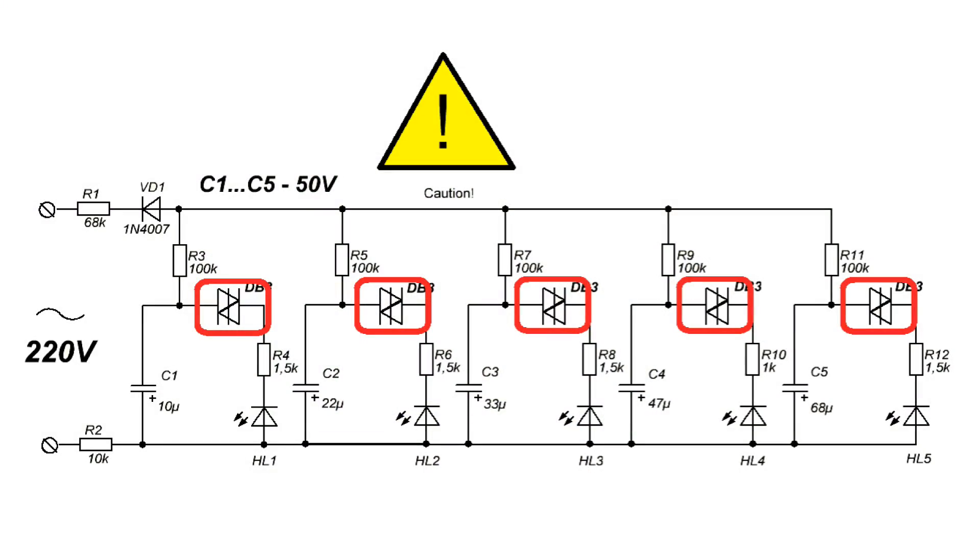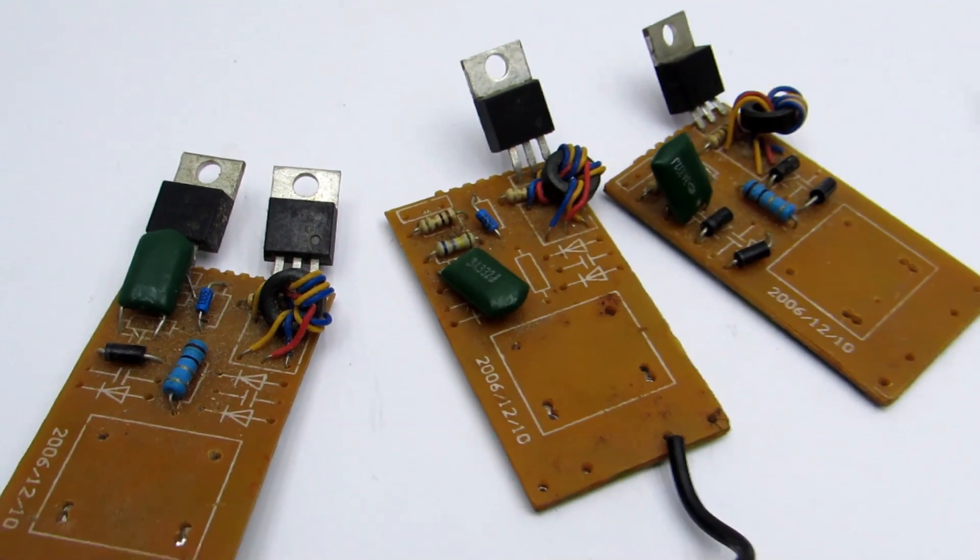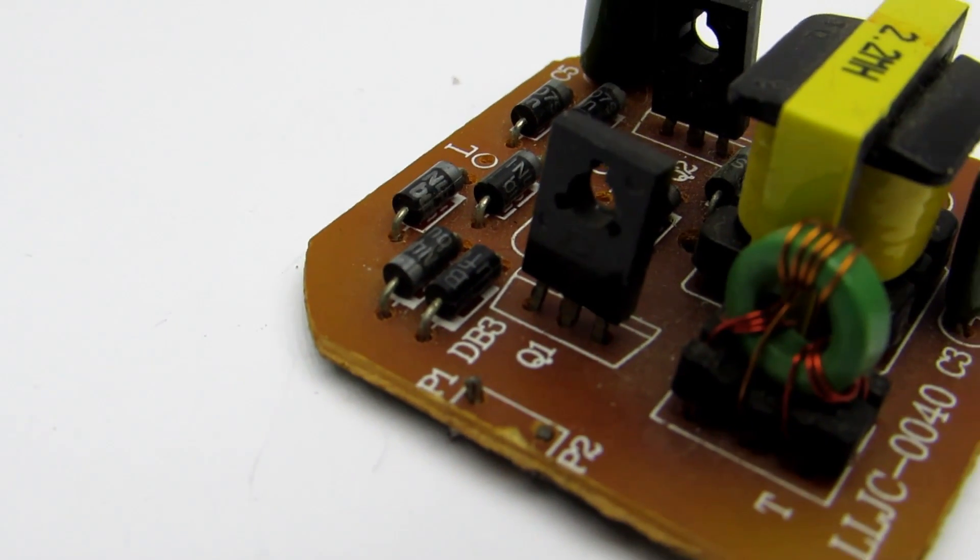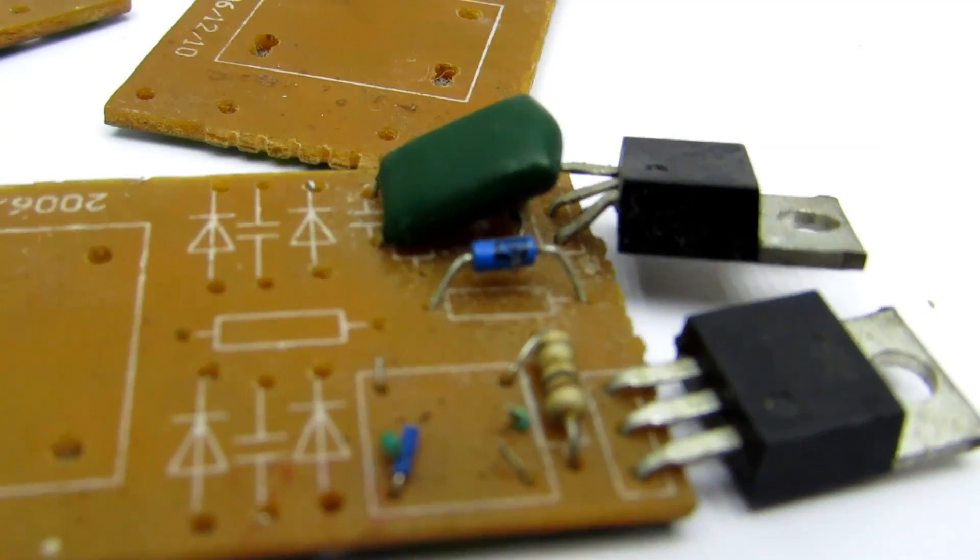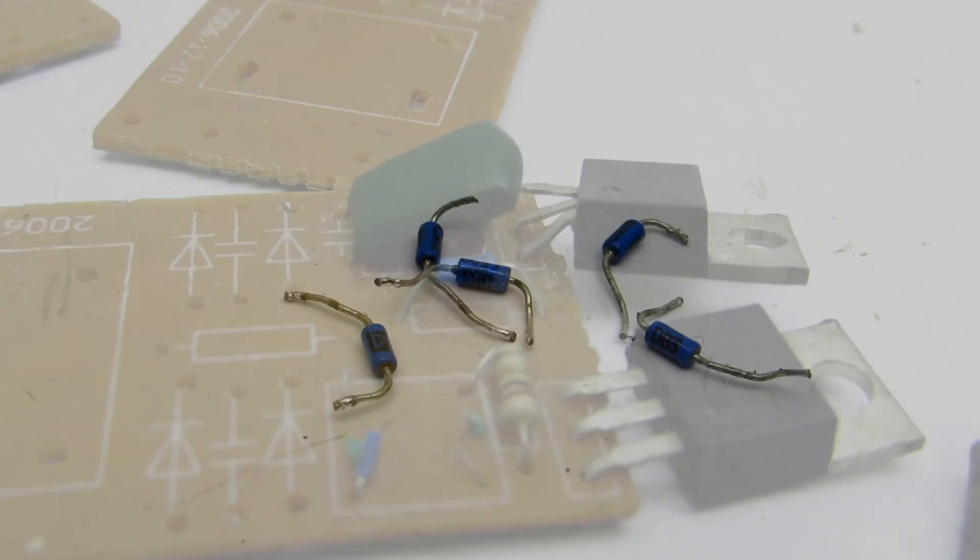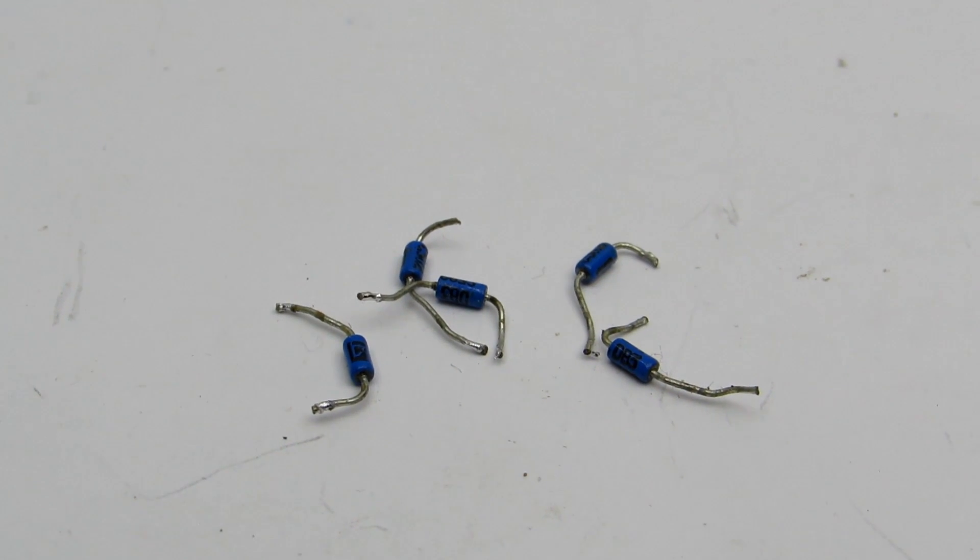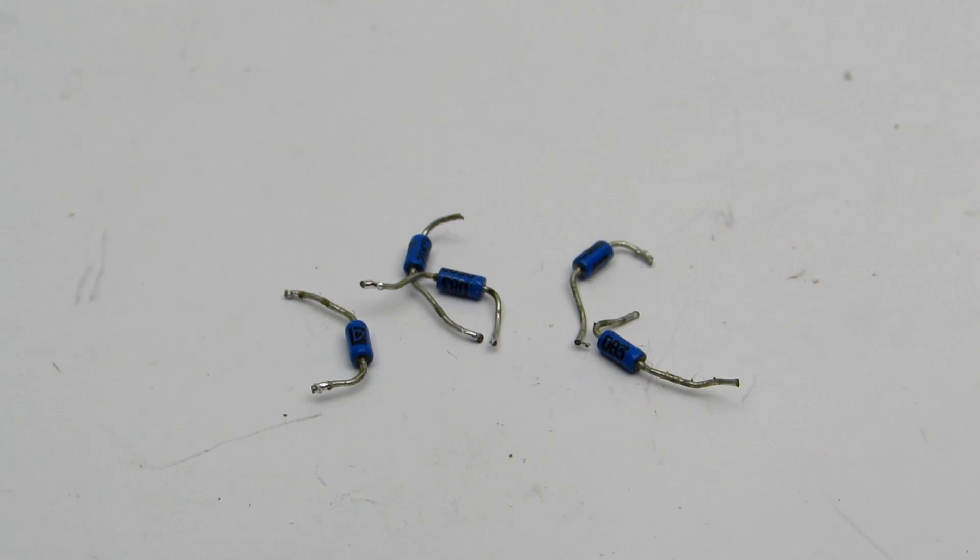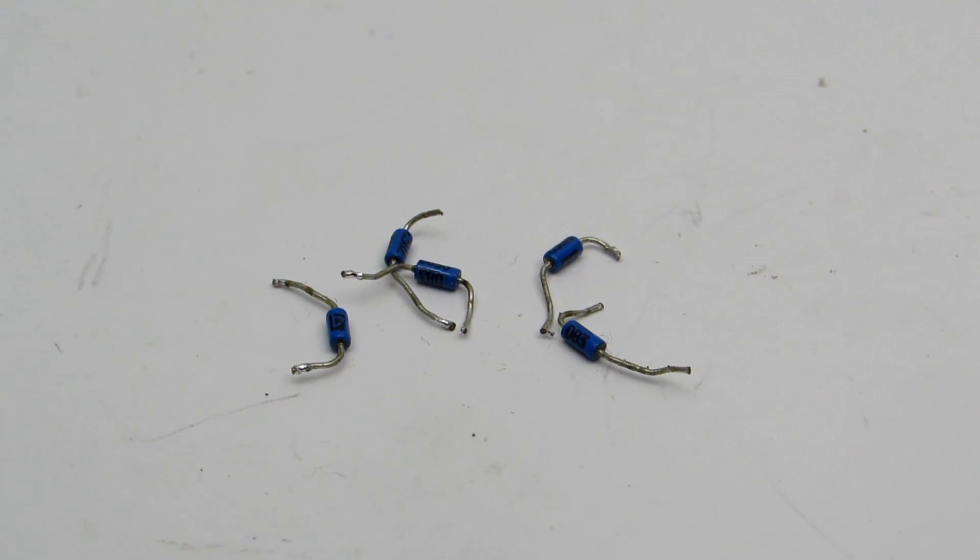Denister can be found on the boards of electronic transformers or on base of energy saving lamps. In general they are very cheap. Under the video there is a link to buy. By the way, denister is symmetric element, so the polarity is not important - it will work at any direction.